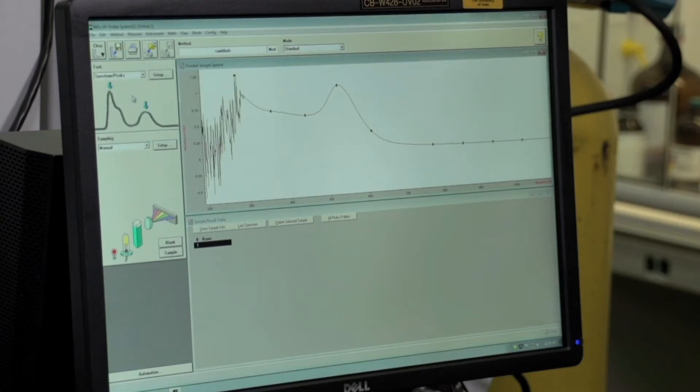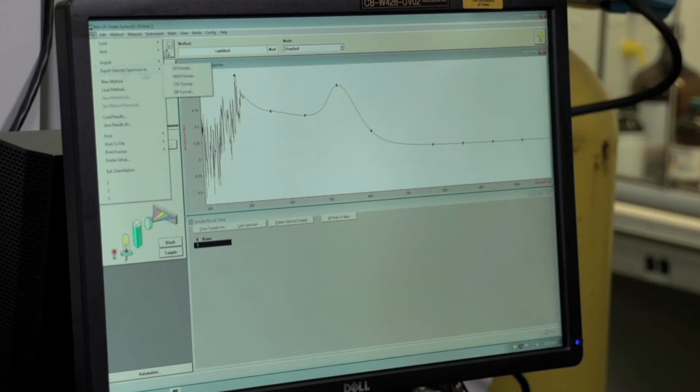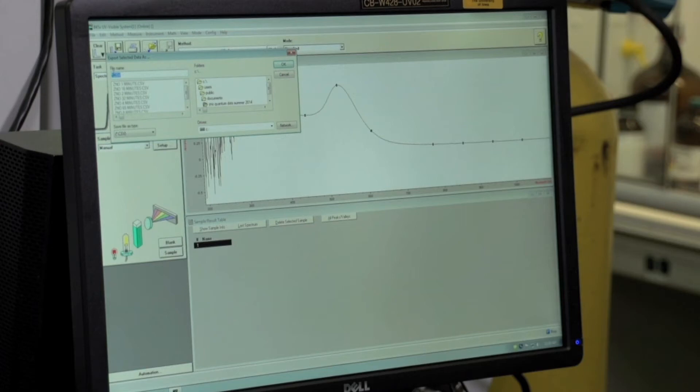You'll also want to export this as a CSV file so that you can use it in the computer lab downstairs on Origins or Microsoft Excel. So to do that, make sure your spectrum is still highlighted. Go to file, export selected spectrum as, and then select CSV file. And then name it something that you can recognize and save it in your H drive so that you can access it on any of the on-campus computers.